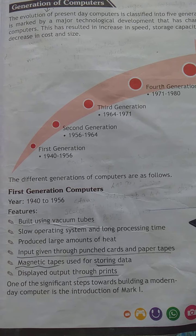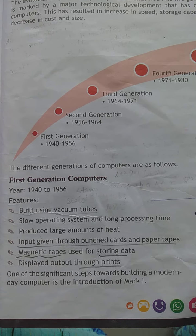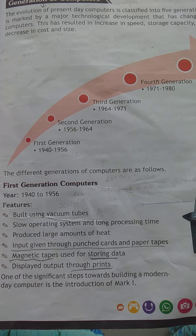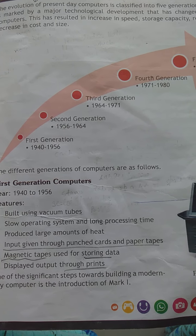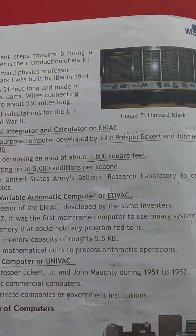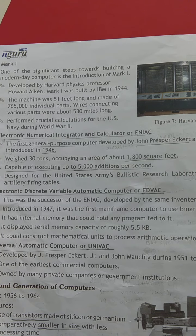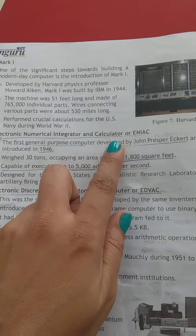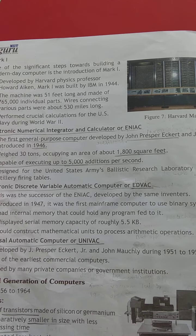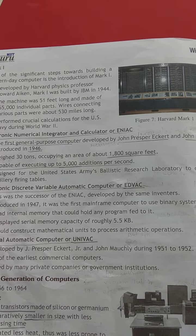We had some problems in the first generation computer. To overcome these problems we have the second generation computer. Before going to second generation, we have some examples of first generation computers. The first example is ENIAC — Electronic Numerical Integrator and Calculator.